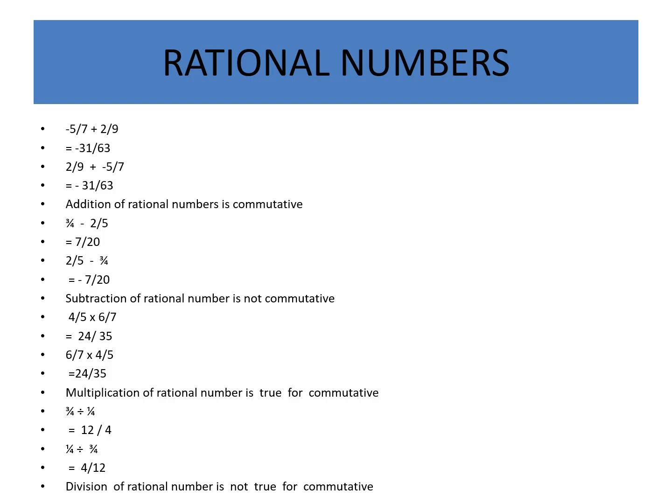For rational numbers, take −5/7 and 2/9. Adding them using LCM gives −31/63. Interchanging: 2/9 + (−5/7) also gives −31/63. Since both answers are the same, addition of rational numbers is commutative.